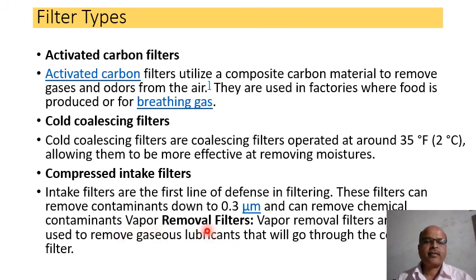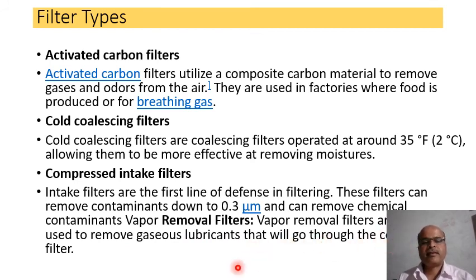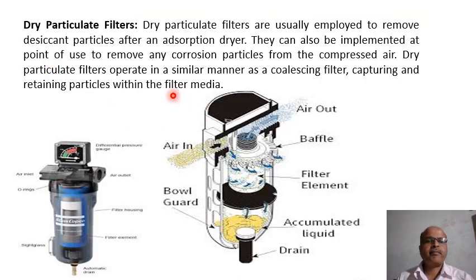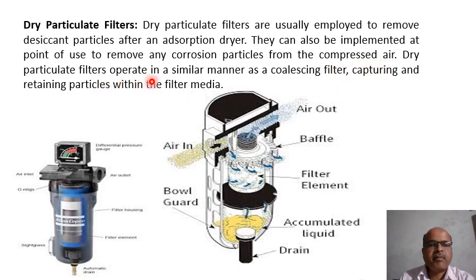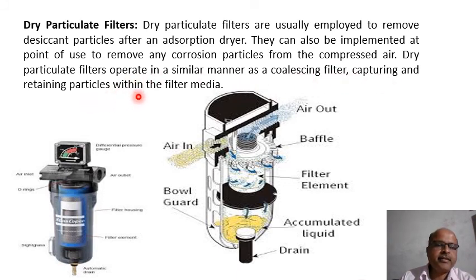Removal filters are typically used to remove gaseous ingredients that would go through the coalescing filter. Dry particulate filters are usually employed to remove fine particles after the absorption dryer; they can also be implemented at point of use to remove corrosion particles from the compressor. Dry particulate filters operate in a similar manner to a coalescing filter, capturing and retaining particles within the filter media.